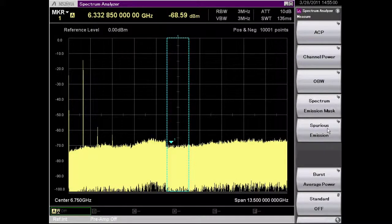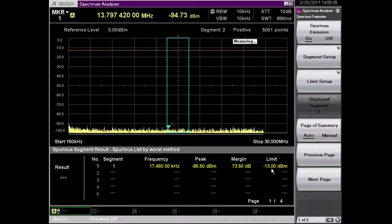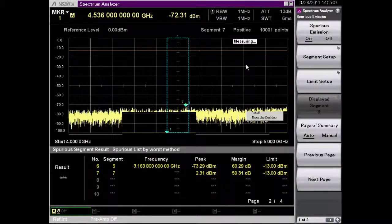Under Measure I have Spurious Emission. I will select that. Now when running Spurious Emission it's probably best to do a single sweep.